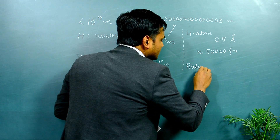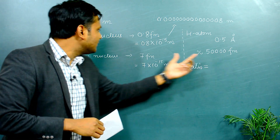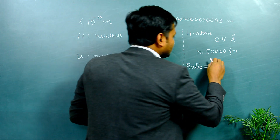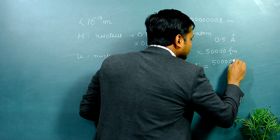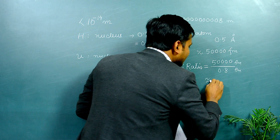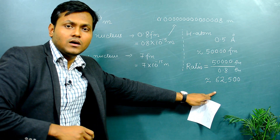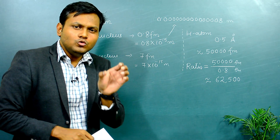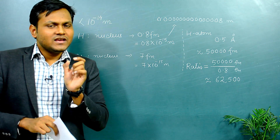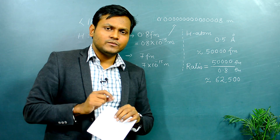If I find the ratio between the atomic size and the nuclear size - dividing the hydrogen atom radius of 50,000 femtometers by the nuclear radius of 0.8 femtometers - this gives us approximately 62,500. That is a huge number. The hydrogen nucleus is about 62,000 times smaller than the atom itself, or the nucleus has a radius about 62,000 times smaller than the distance at which the electron exists.